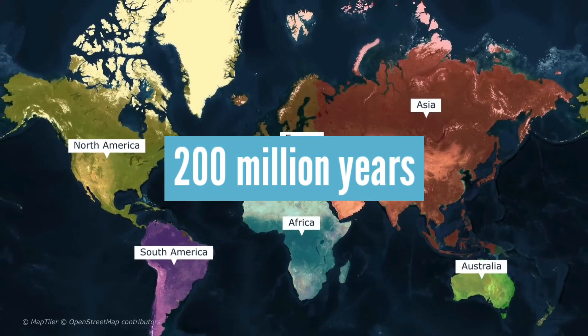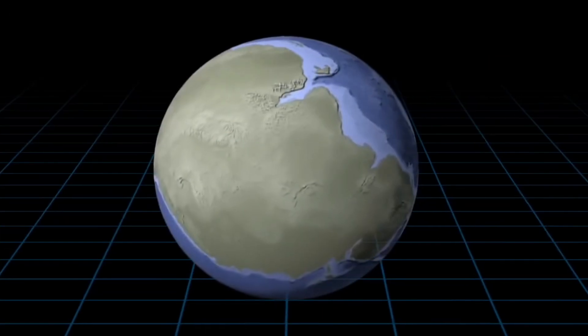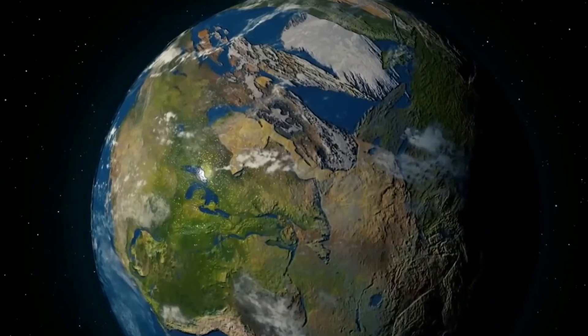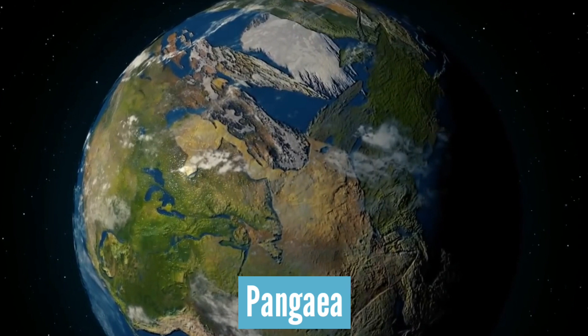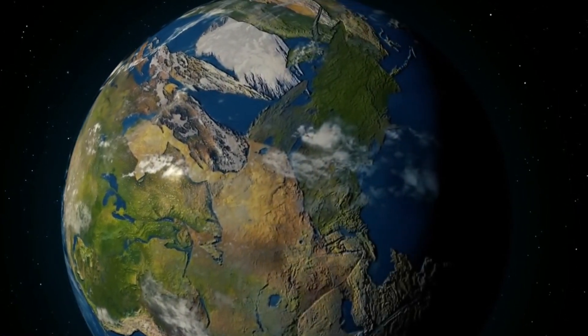However, until about 200 million years ago, the Earth didn't have seven continents. Instead, it had Pangaea, a substantial supercontinent that was surrounded by a single ocean.